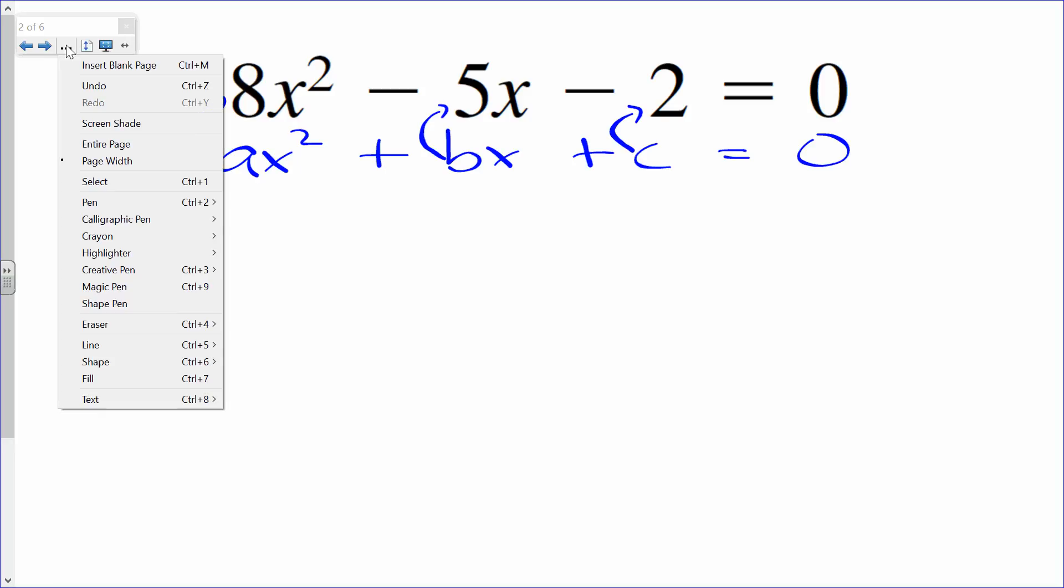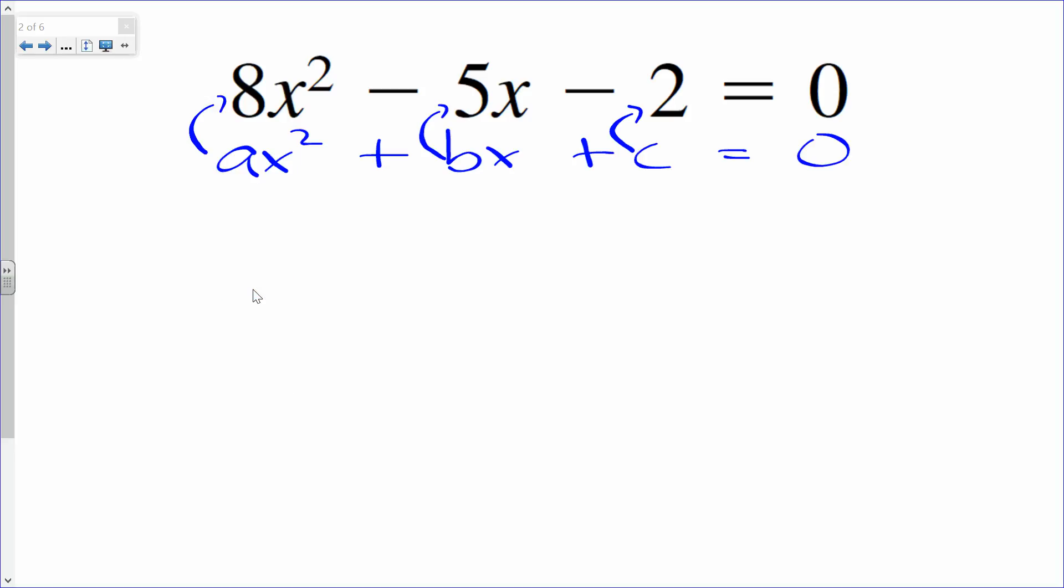Let me go ahead and write out the quadratic formula. The quadratic formula says x is always going to be negative b plus and minus the square root of b squared minus 4ac, which is the discriminant. You should recognize that. We talked about that yesterday. All over 2a.